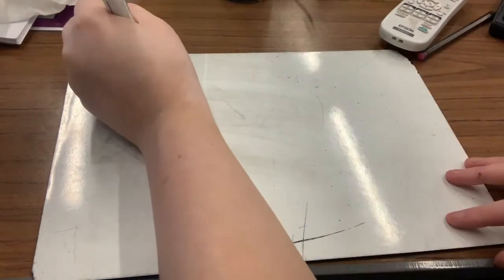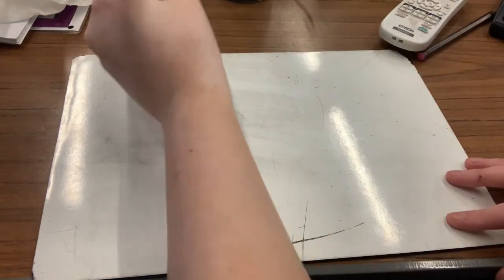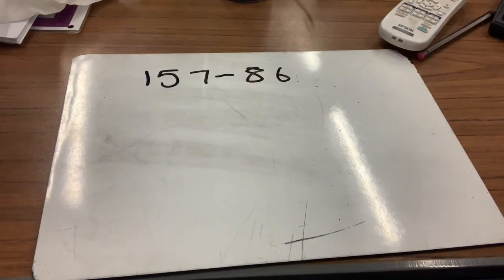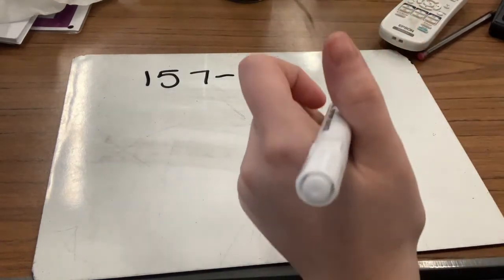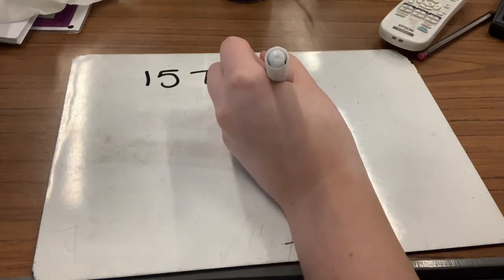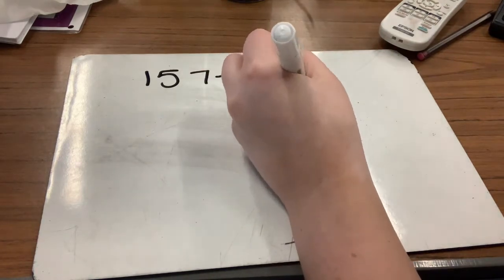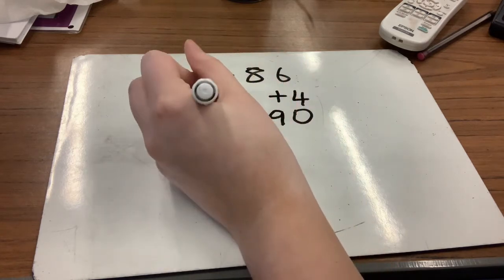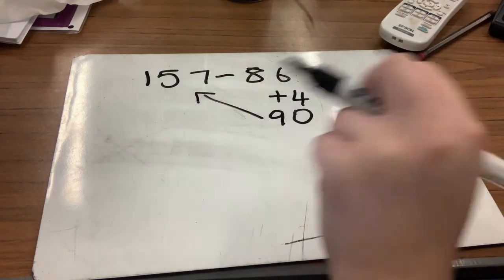Okay, let's try this one: 157 take away 86. Alright, pause and give that a go if you can. Alright, so I'm starting off by adding on my four to bring me up to my next 10, which would be 90. Now I need to get from 90 up to 157, so let's count on our tens.